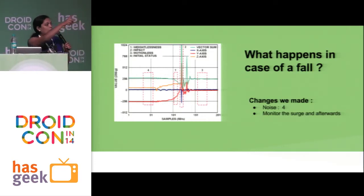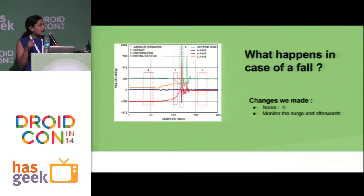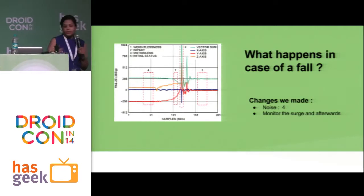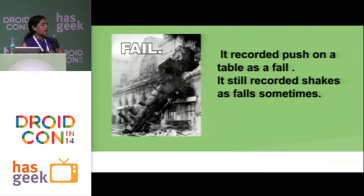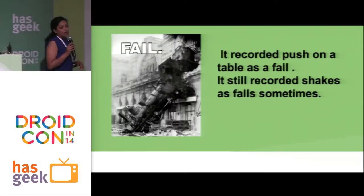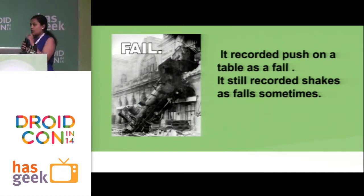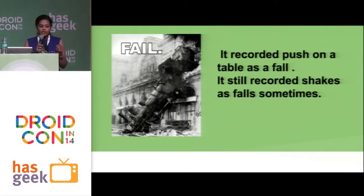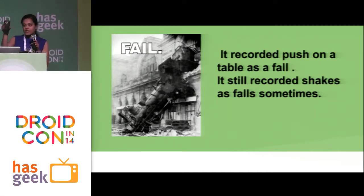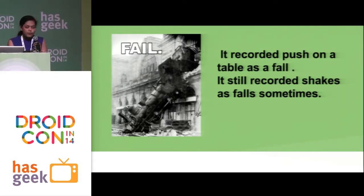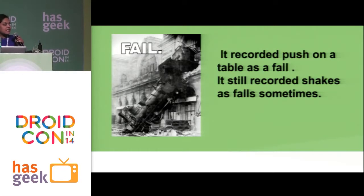We changed the endpoint and monitored what happens after a surge occurs. We did this whole exercise and finally narrowed it down. But it still didn't fully solve it. Small jerks were eliminated, small distances were eliminated, but we still had shake. If I did something like this, it still showed as a phone fall. And if I threw my phone horizontally, it still showed as a phone fall. So these were the two remaining problems.